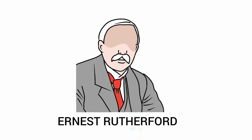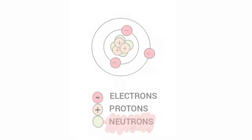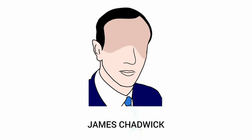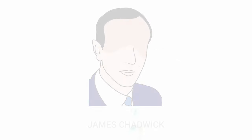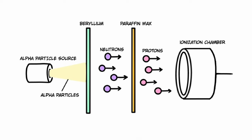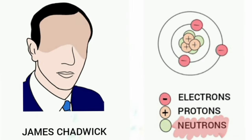Ernest Rutherford was the first scientist to predict that there had to be some neutral particles present with protons in the nucleus. In 1932, neutrons were discovered by James Chadwick. He performed an experiment where a beryllium nucleus was bombarded by alpha particles. Some radiations were emitted. Unlike cathode and anode rays, these rays did not deviate in the presence of electric and magnetic fields. This confirmed that these particles were neutral. James Chadwick named these neutral particles neutrons.